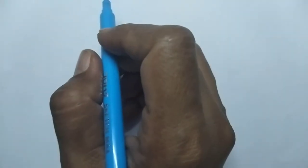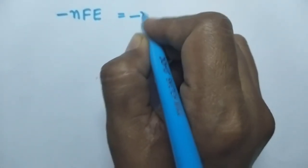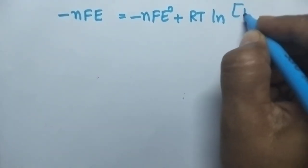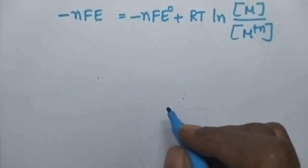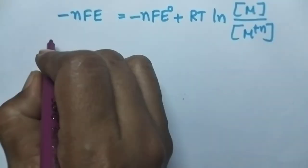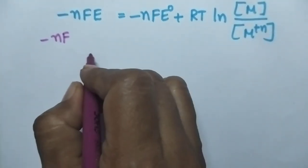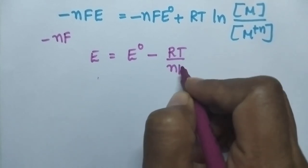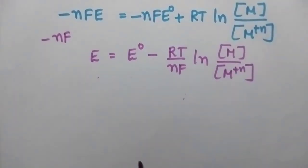Let us substitute the values of ΔG and ΔG° in the above equation. Then it becomes: −NFE = −NFE° + RT ln(concentration of metal divided by concentration of metal ions). Dividing the above equation by −NF, it becomes E = E° − RT/NF × ln(concentration of metal / concentration of metal ions).